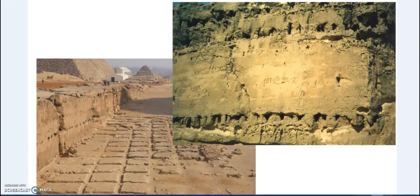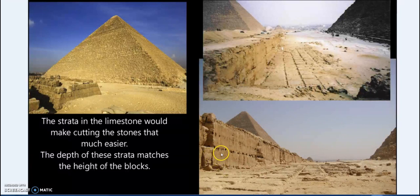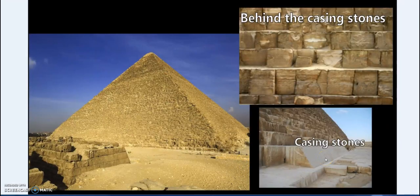Moving back to Egypt and the pyramids, these quarry blocks do match the size of blocks on the pyramids themselves. The height of these natural strata lines also matches the height of each course in the pyramid. By cutting along the strata, you save enormous effort — you almost have a ready-made line to begin with, requiring only a bit of shaving from the top to produce the finished blocks.